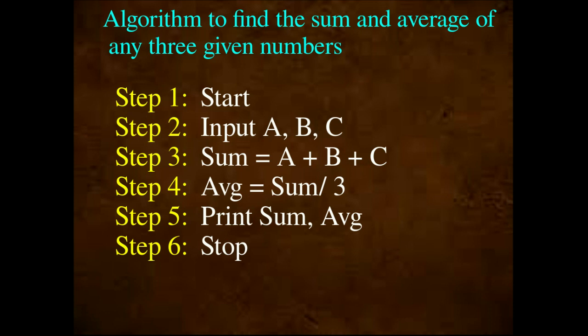What is Step 2? We have three data inputs. Step 2 is data input: Input A, B, C. The three numbers are A, B, C. Now we have two values to find: sum and average. Step 3: Sum is equal to A plus B plus C.